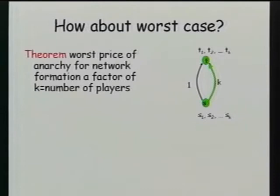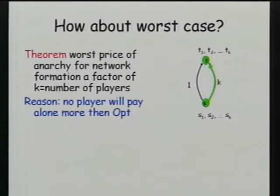The worst case for the network design game is exactly what we saw: K users failing to coordinate on the right thing, paying a factor of K more than they should. It's easy to see this is the worst case. No player will ever pay single-handedly more than the optimum — at worst, he has to buy the whole optimum network by himself. A factor of number of users is as bad as it can be.